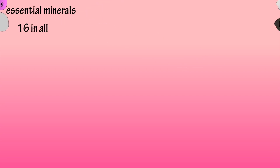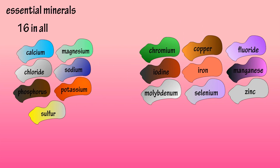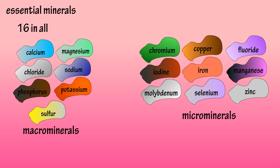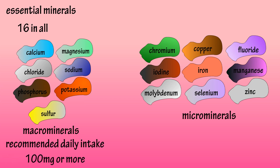The minerals that the body needs are called essential minerals. There are 16 of them, which I have listed on the screen. These can be divided into two groups: macro-minerals and micro-minerals. Macro-minerals are major elements that include calcium, chloride, magnesium, phosphorus, potassium, sodium, and sulfur. These elements have a recommended daily intake of 100 mg per day or more for adults.